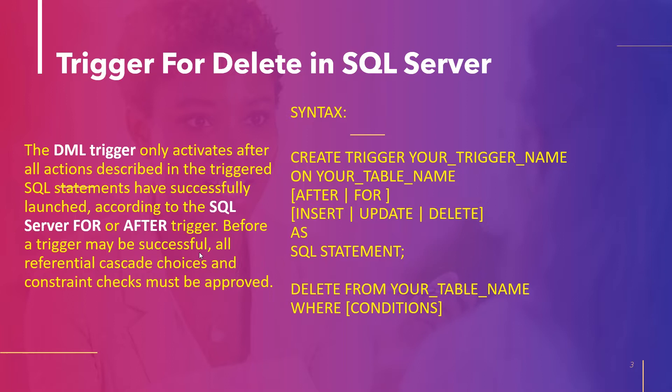In the first topic, trigger for DELETE in SQL Server: the DML trigger only activates after all the actions described in the trigger SQL statements have successfully launched. According to SQL Server, for a FOR or AFTER trigger to be successful, all the differential cascading choices and constraint checks must be approved before the trigger makes effect on the table.